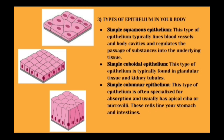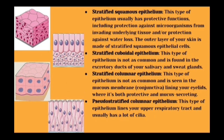Simple squamous epithelium lines blood vessels and body cavities, helping regulate the passage of substances from underlying tissue to the inner lumens. Simple cuboidal is placed near glandular tissues and kidney tubules, involved in secretion or absorption. Simple columnar epithelium is mainly involved in absorption and has apical cilia or microvilli on the top layer of the cells, which are primarily involved in absorption.